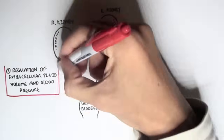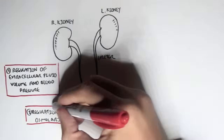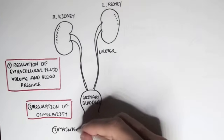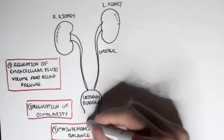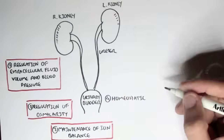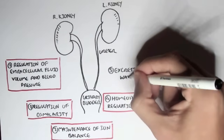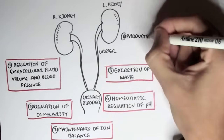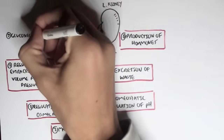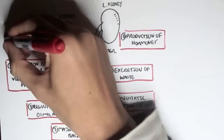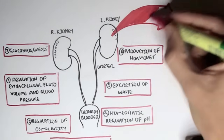First, they regulate extracellular fluid volume and blood pressure, and they also regulate osmolarity, the maintenance of ion balance. They have a role in homeostatic regulation of pH, excretion of waste, production of hormones such as renin, and they also perform gluconeogenesis in times of starvation. These are just some of the things the kidneys do.